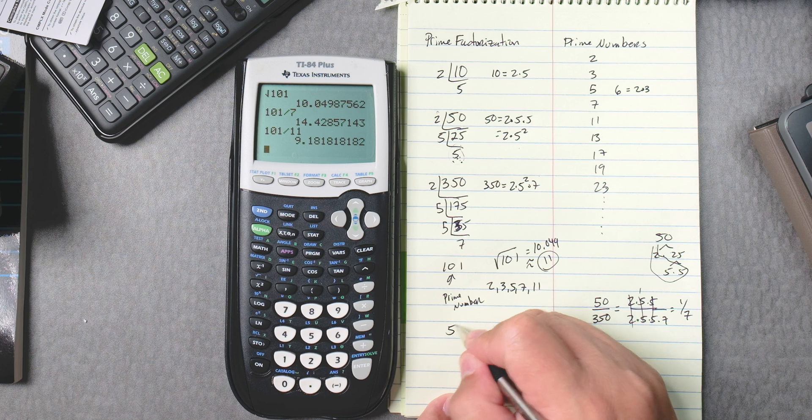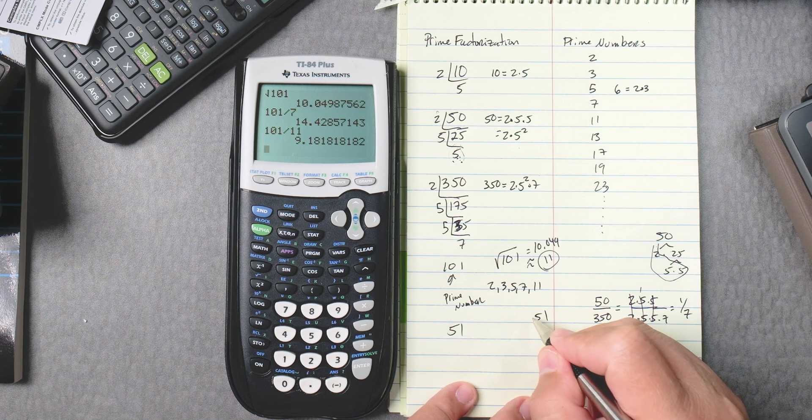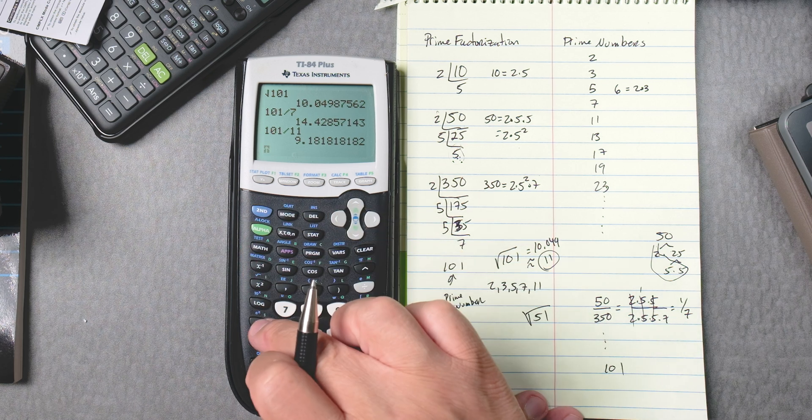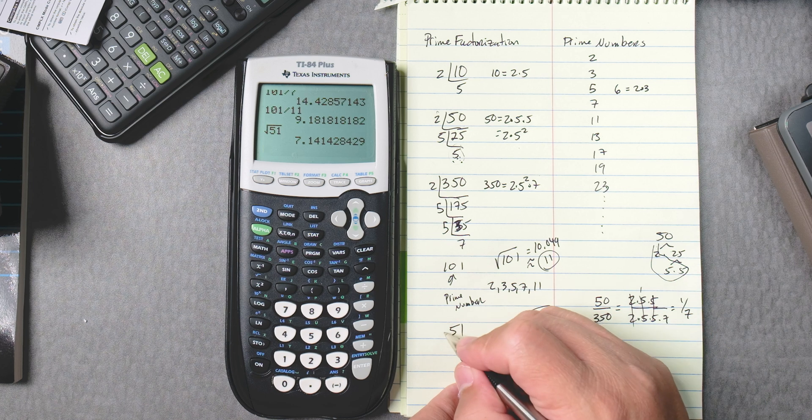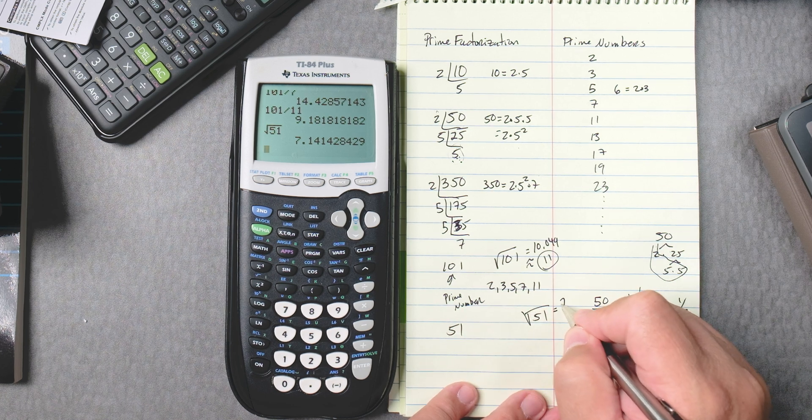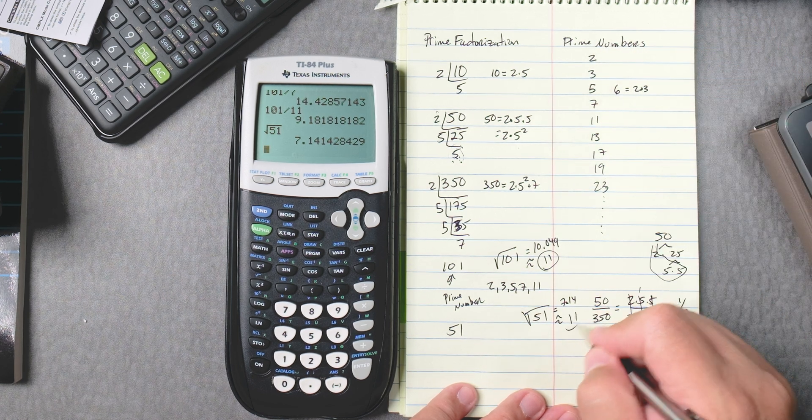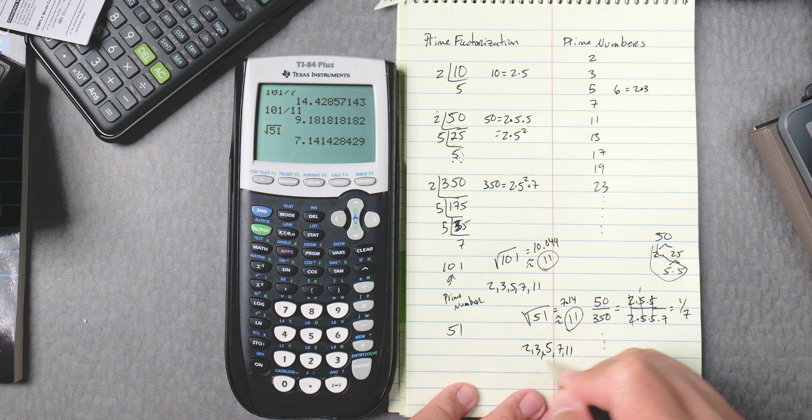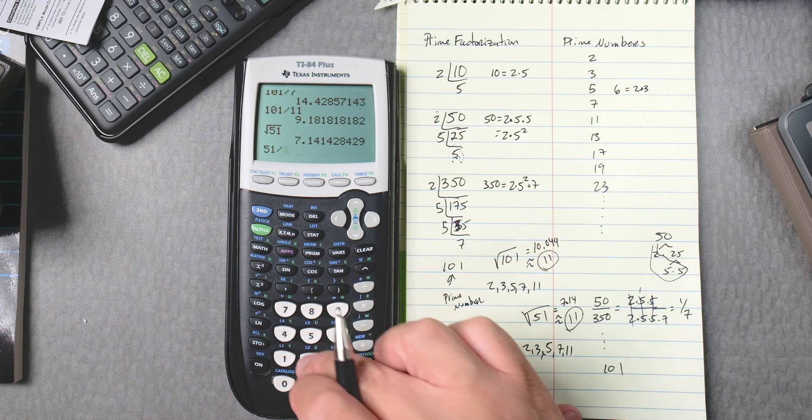How about 51? You might say to yourself, 51 looks like one of those prime numbers, but it's not. Take the square root of 51, second, x squared, 51, press enter. That gives you 7.14, which means the next prime number is 11. 2, 3, 5, 7, 11 might be able to go into 51. 51 divided by 2? Nope. 51 divided by 3? It does.